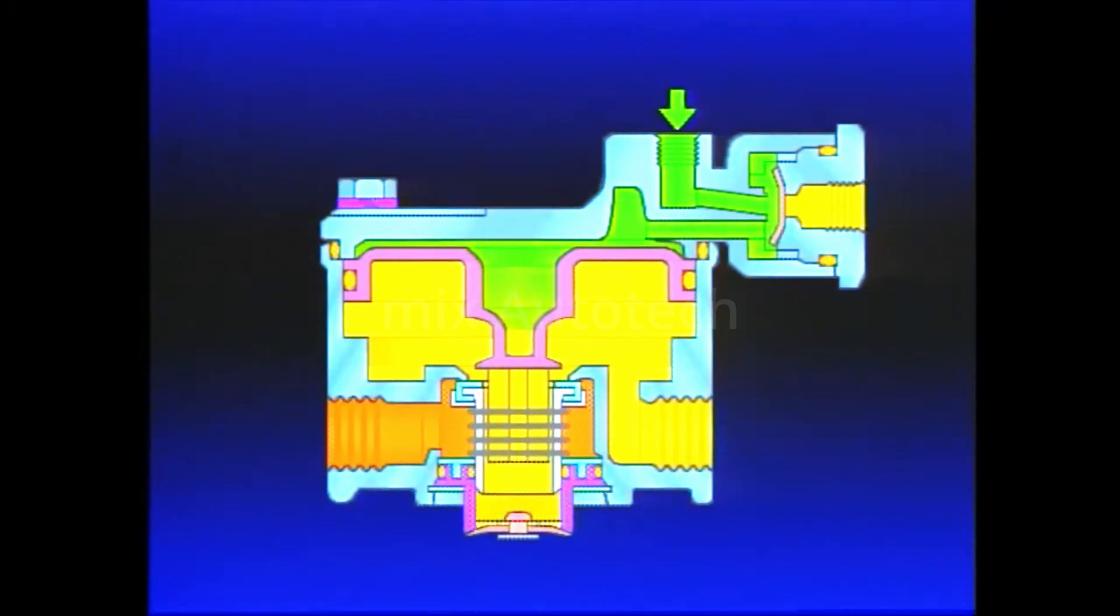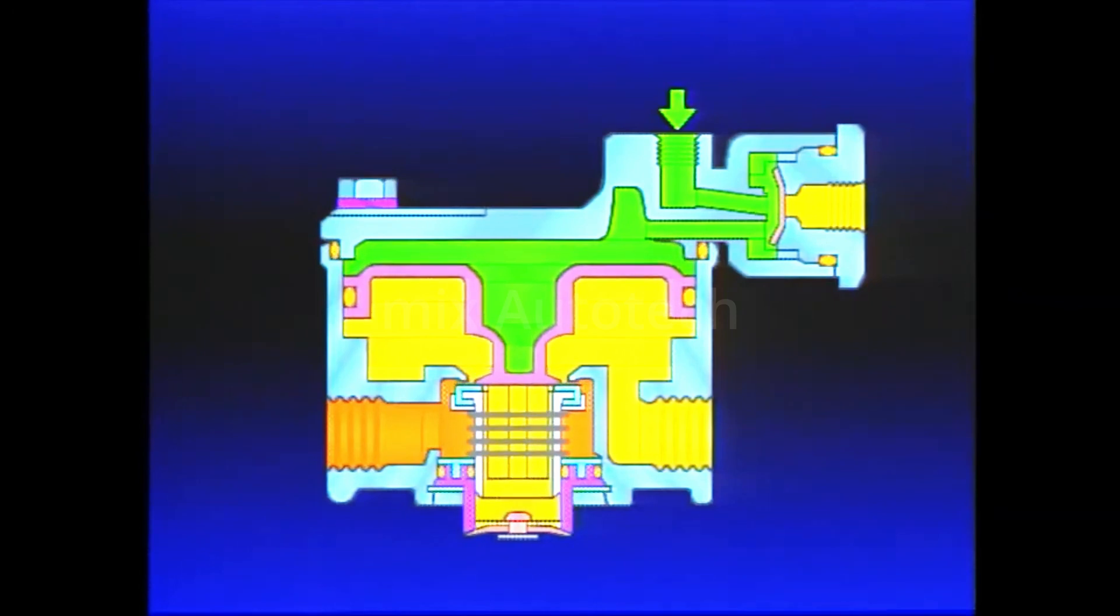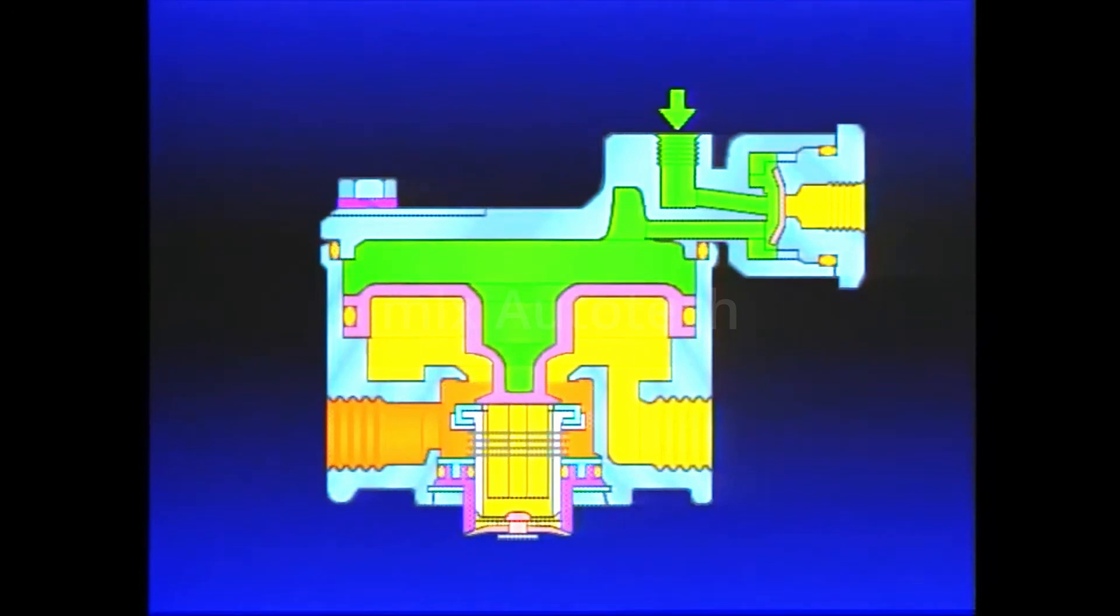Air from the balance port flows into the cavity above the relay piston, forces the piston down, opening the inlet, delivering air to the spring brake cavity.